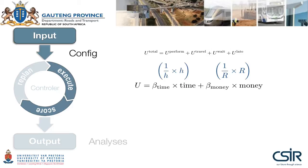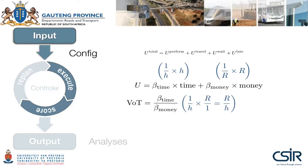Beta time is the marginal utility of time, measured in utilities per hour. Beta money is the marginal utility of money, measured in units per rand or units per euro, whatever your currency. The ratio of beta time to beta money gives a value measured in rands per hour — that's the value of time. It would be plausible to fix the marginal utility of time for all agents, since all agents only have 24 hours per day and should value their time similarly. Their income, however, may differ, and we know that from census data. So if we make the marginal utility of money a function of an agent's income, we can build a model in which each agent has a unique value of time. And this is indeed possible in MATSIM.